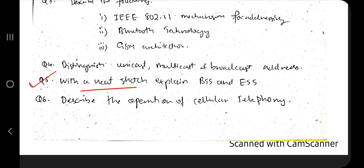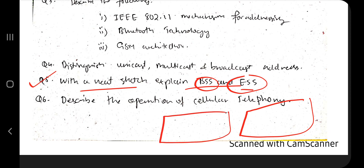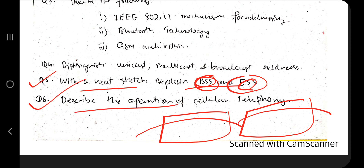Next, explain with a neat sketch BSS and ESS — what are the differences. It relates to different types of coverage: ESS is the extended coverage, BSS is the basic coverage. What are its applications and the different contexts in which it can be used — those are the key points there.